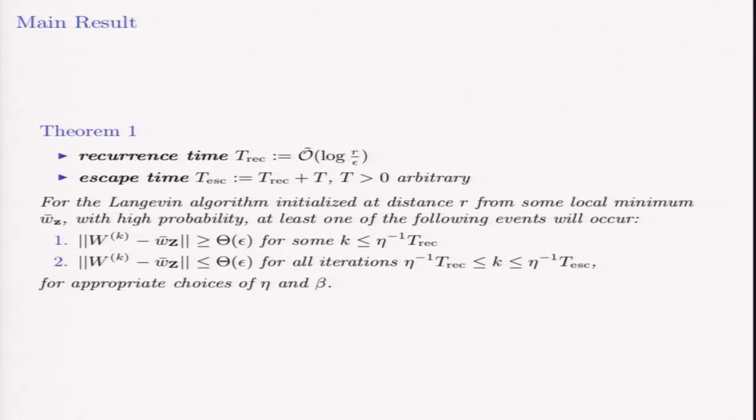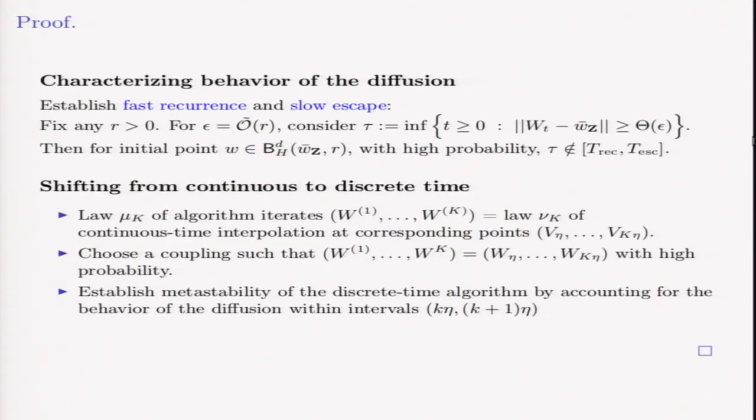This is a streamlined but rigorous definition of metastability for the vanilla Langevin algorithm. It's characterized essentially by what we'll call fast recurrence and slow escape.